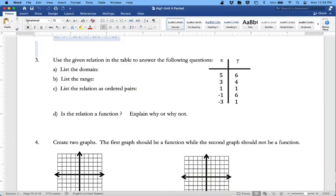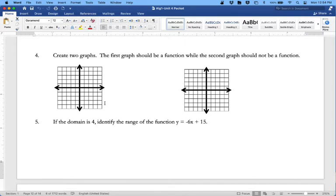Okay, let's look at the bottom item on here, number five. If the domain is 4, identify the range of the function shown there. What this means is if x equals 4, we have to figure out what is y. To do that, we're going to take y equals, leave it be, we're going to put 4 in. This is going to give us negative 24 plus 15, so the final answer is negative 9. That's page one.